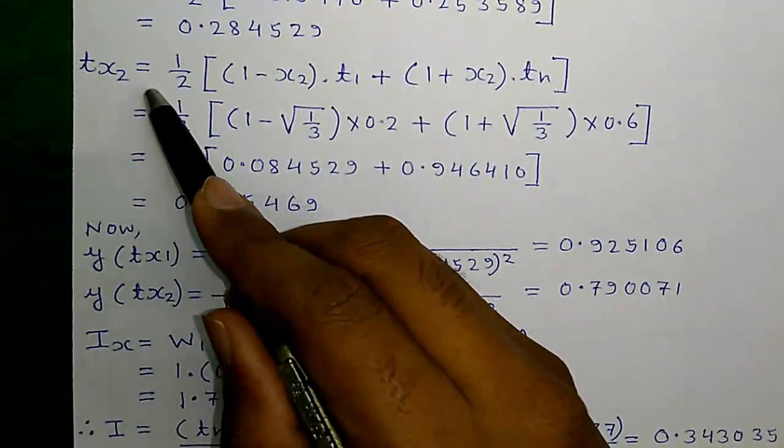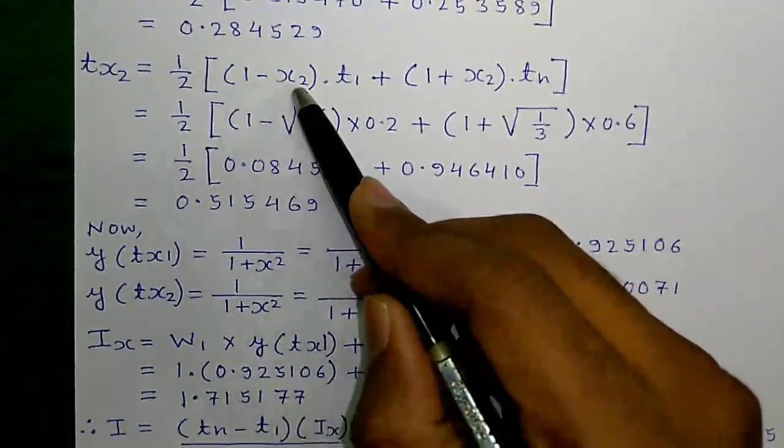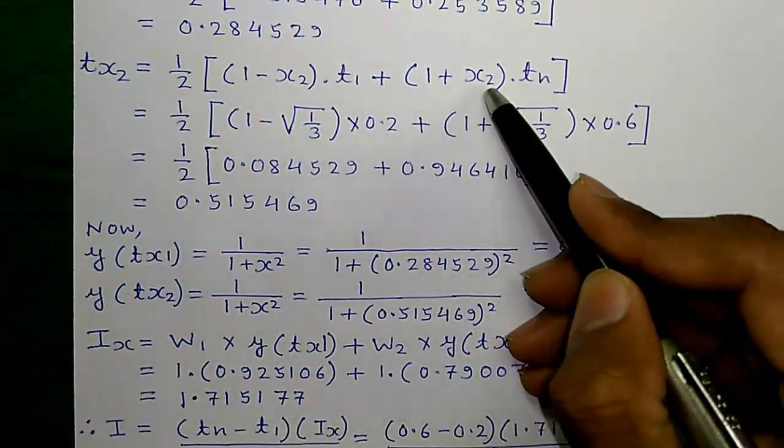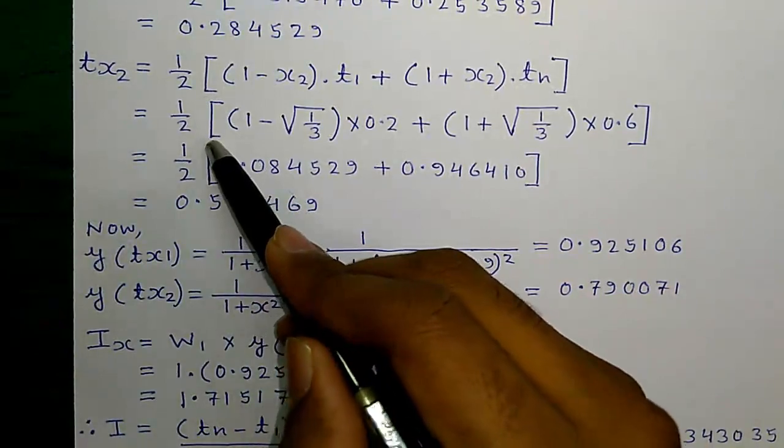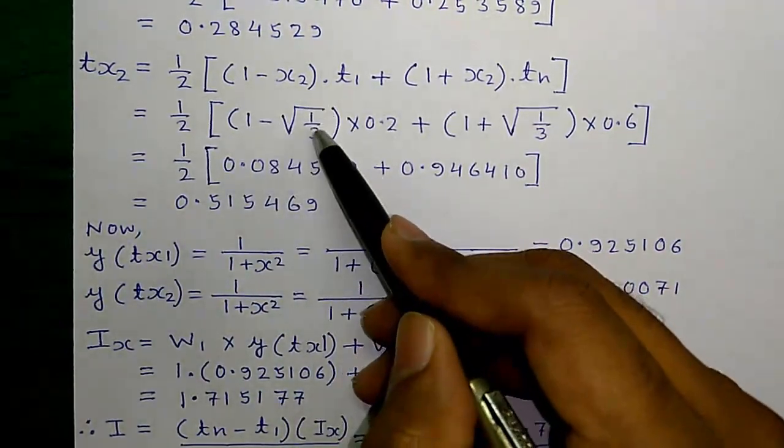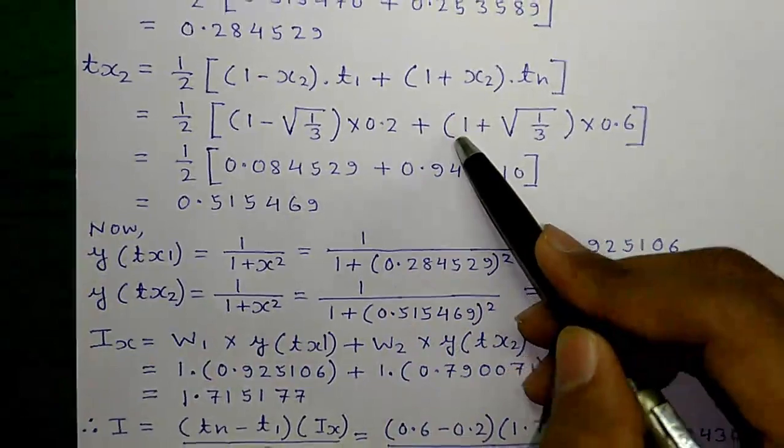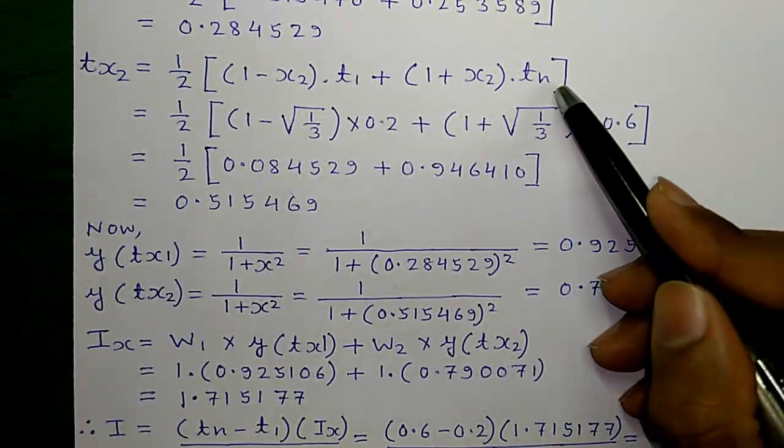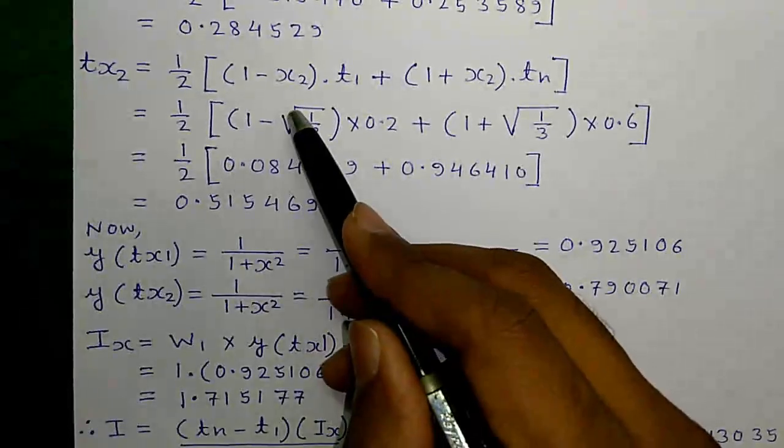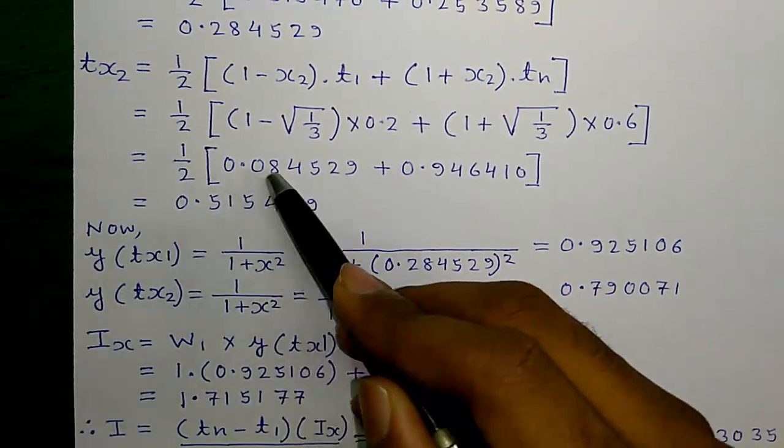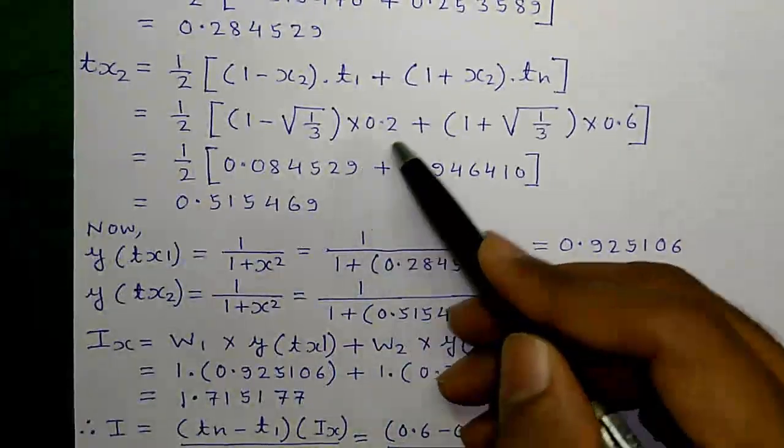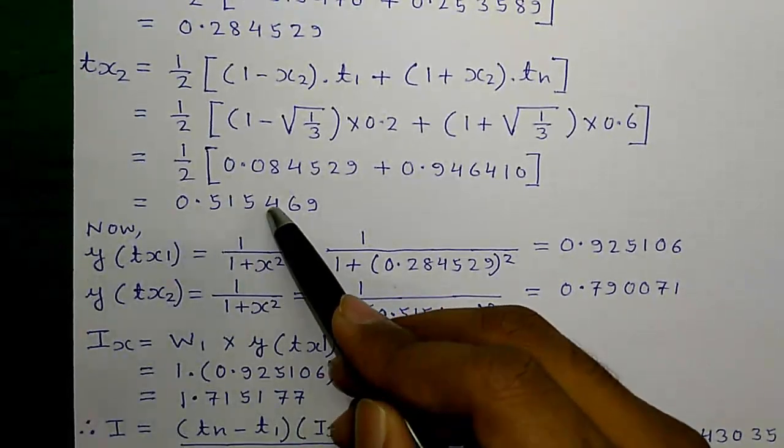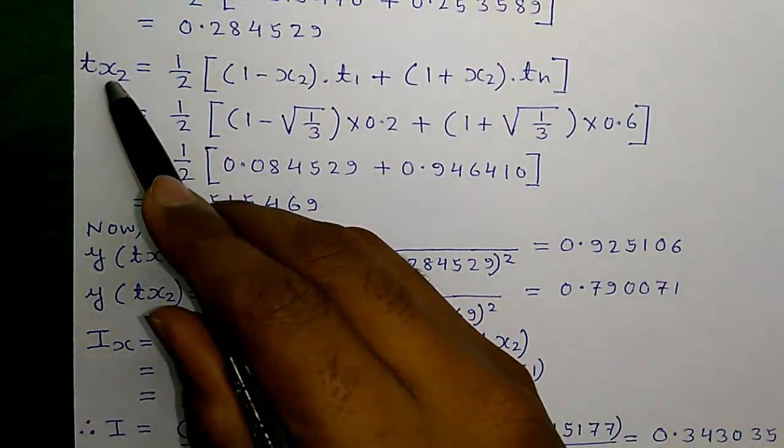Next, Tx2 equals to half into 1 minus x2 times T1 plus 1 plus x2 times Tn equals to half into 1 minus root over 1 by 3 times Tn which is 0.6. So, you will get half into 0.084529 plus 0.946410 which is equal to 0.515469 which is equal to Tx2.